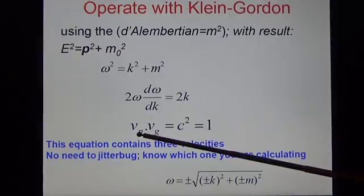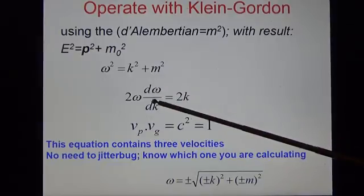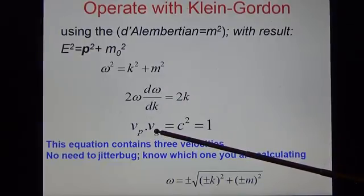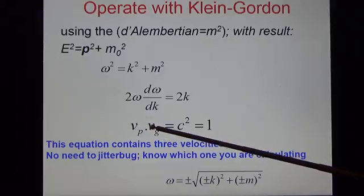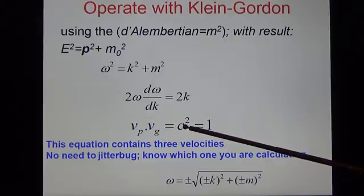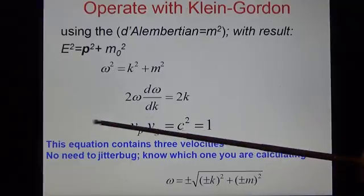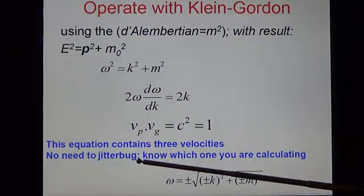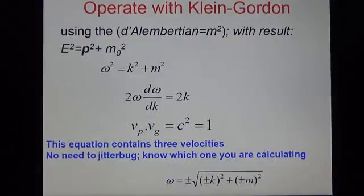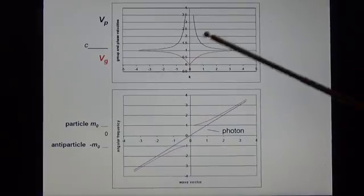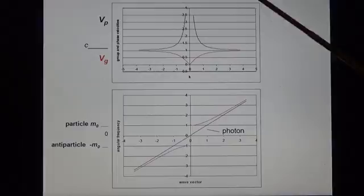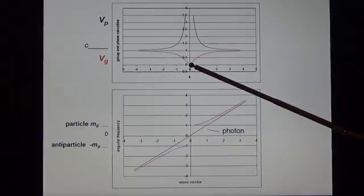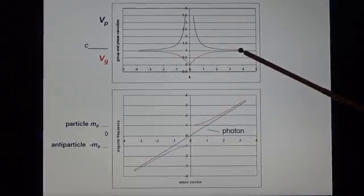Omega divided by k is the phase velocity. And d omega by dk is the group velocity. And the product of the phase velocity and the group velocity is equal to c squared. This equation has three velocities. If you want to jitterbug, you can get a very big prize. But if you want to do physics, you need to know which one you are calculating. Let's map them. The group velocity is well behaved. It tends to zero at low k. It tends to c at high k.